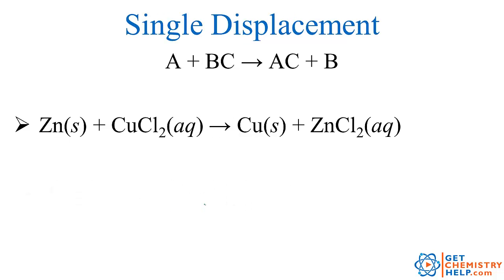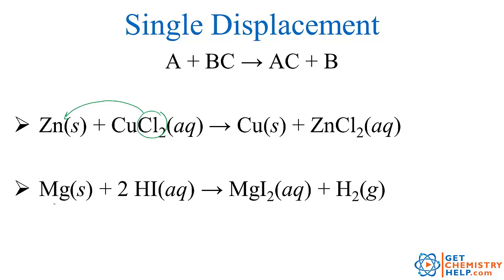For single replacement, remember there's one part of a substance that moves and becomes part of another substance. Here's zinc plus copper chloride forming copper plus zinc chloride. Notice the chlorine was with copper and it was displaced and partnered up with the zinc. Here's another example: magnesium metal reacts with hydroiodic acid to make magnesium iodide plus hydrogen gas. The iodine was with hydrogen and it was displaced — now it's with the magnesium to make magnesium iodide.